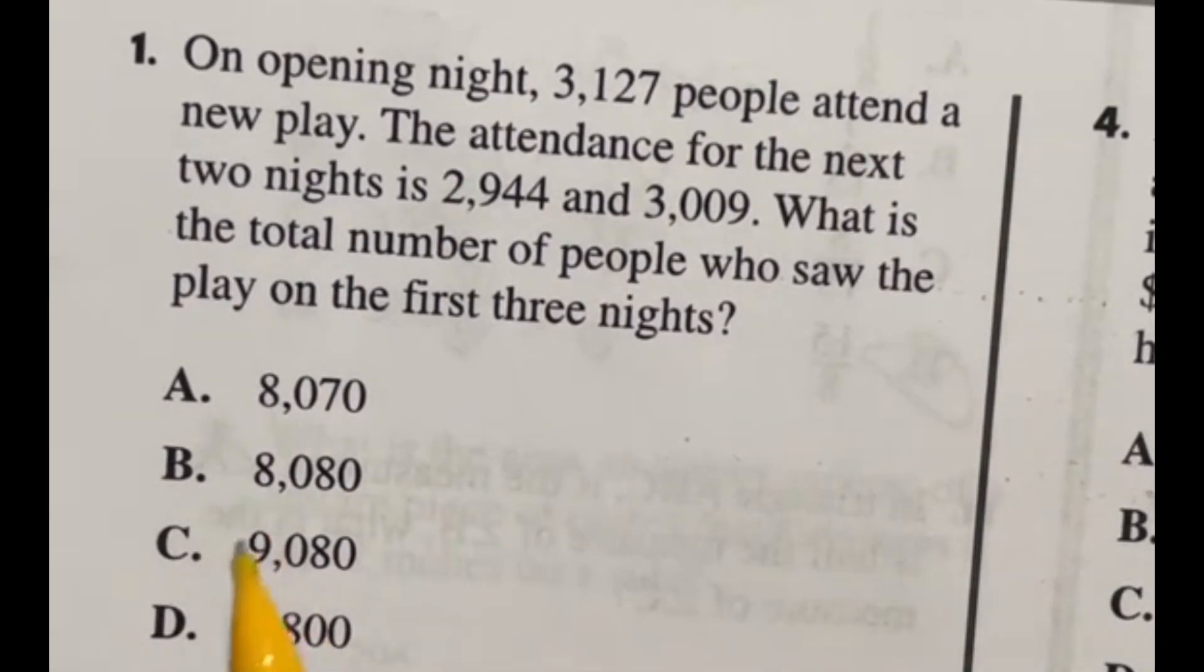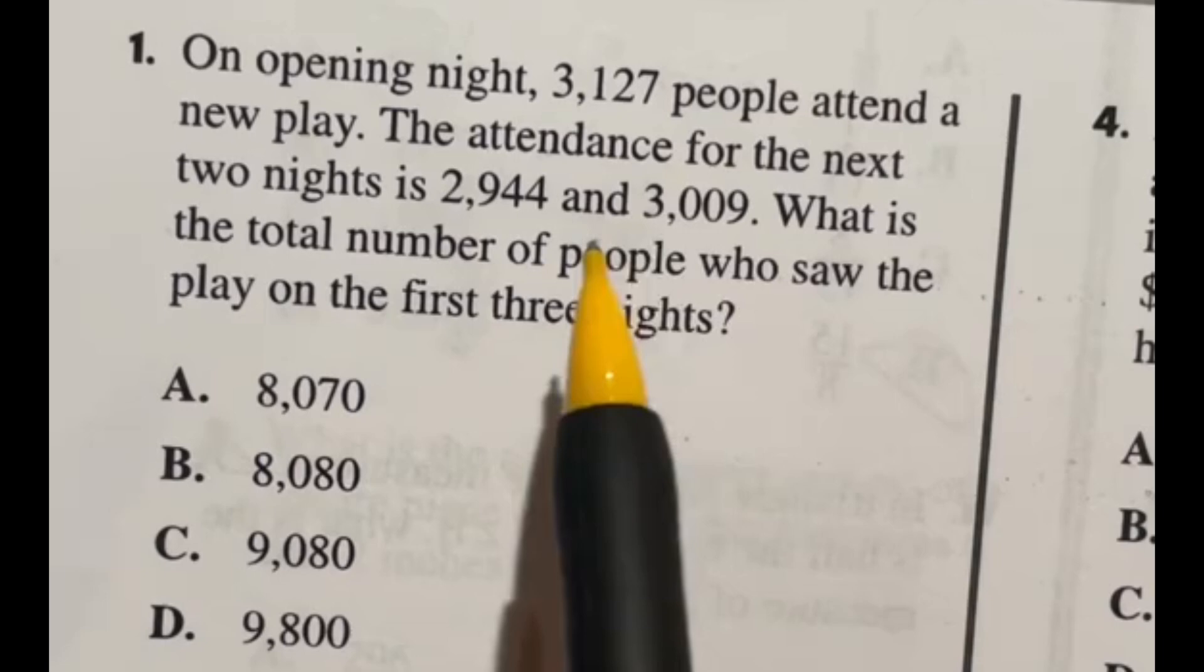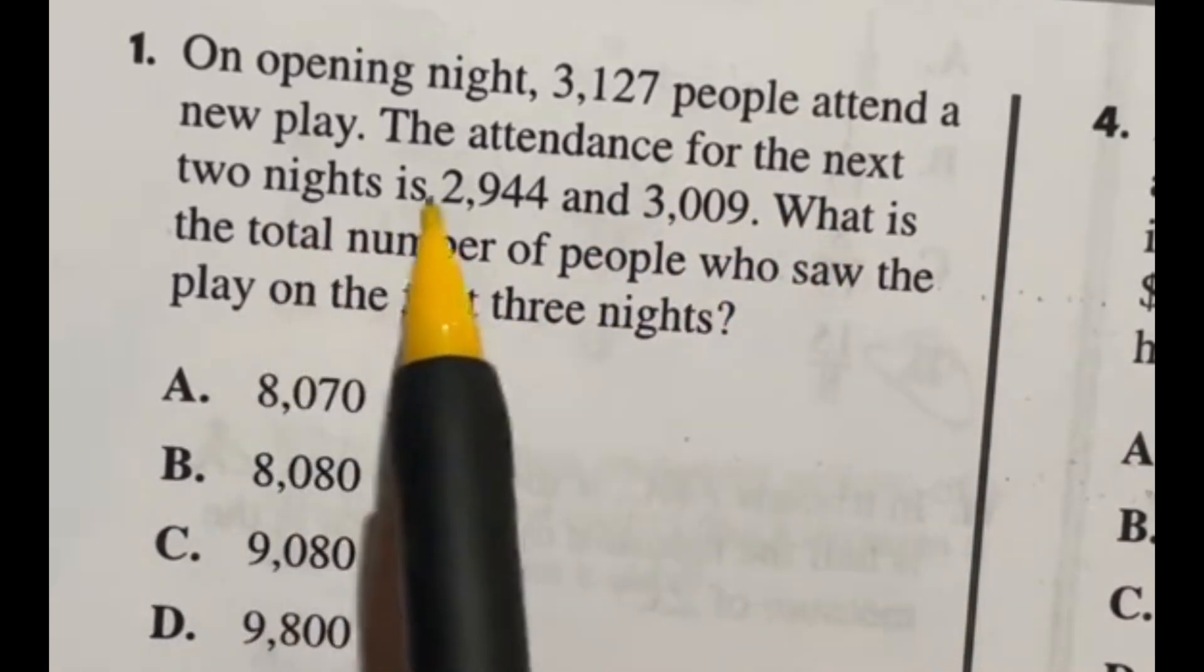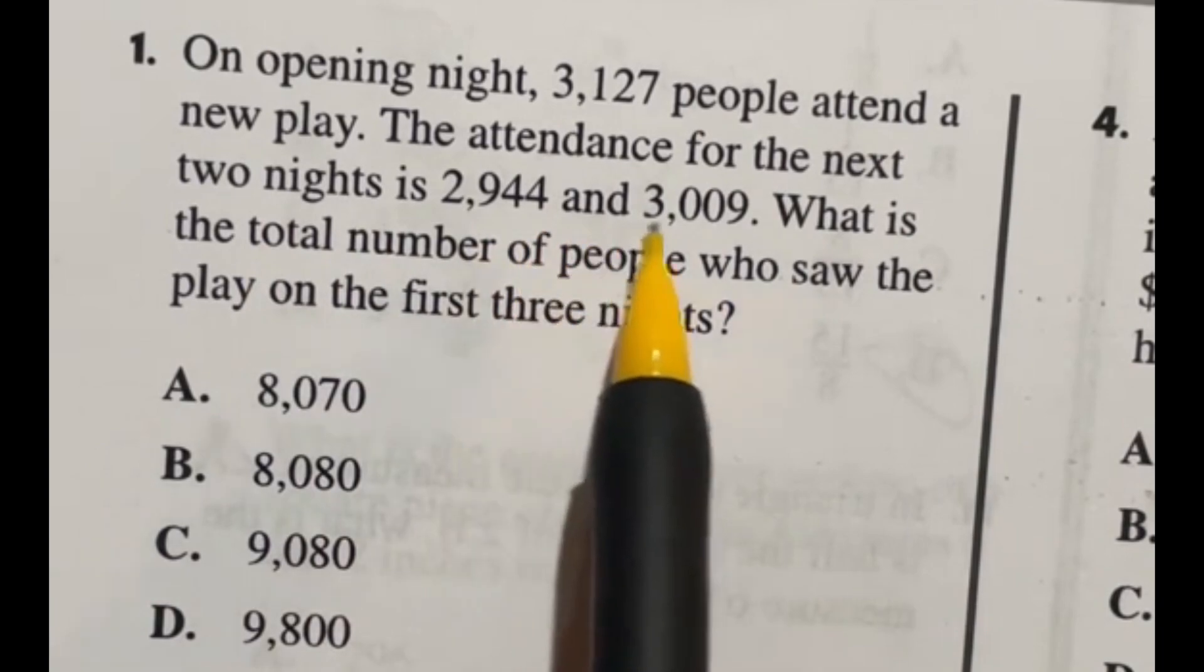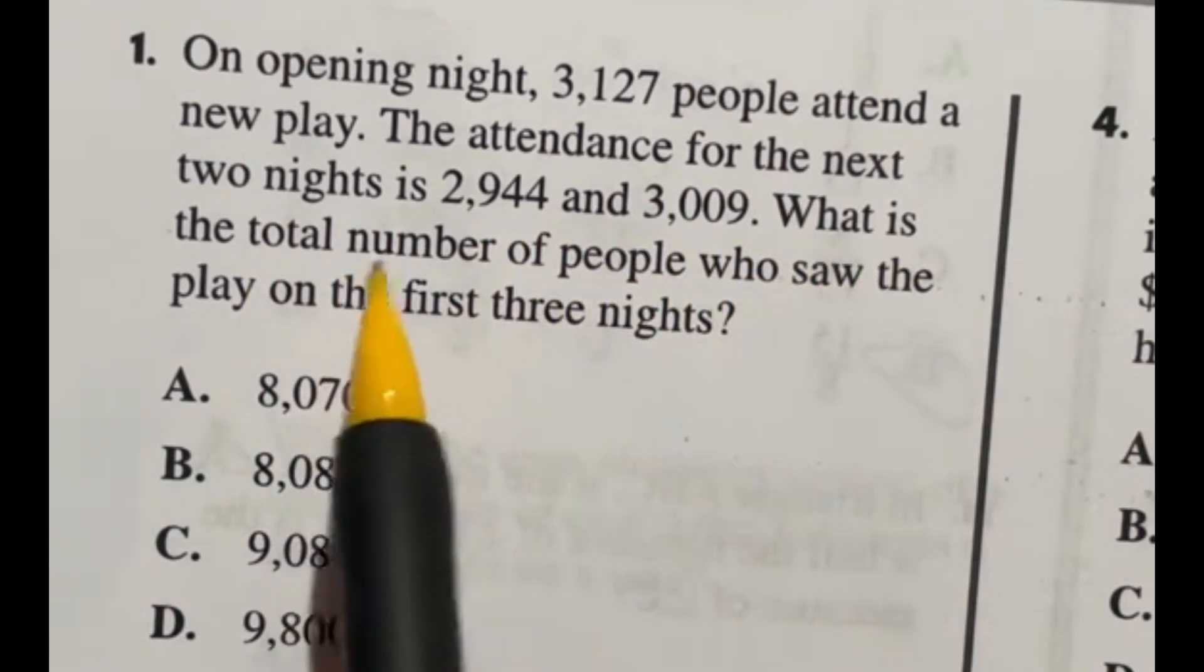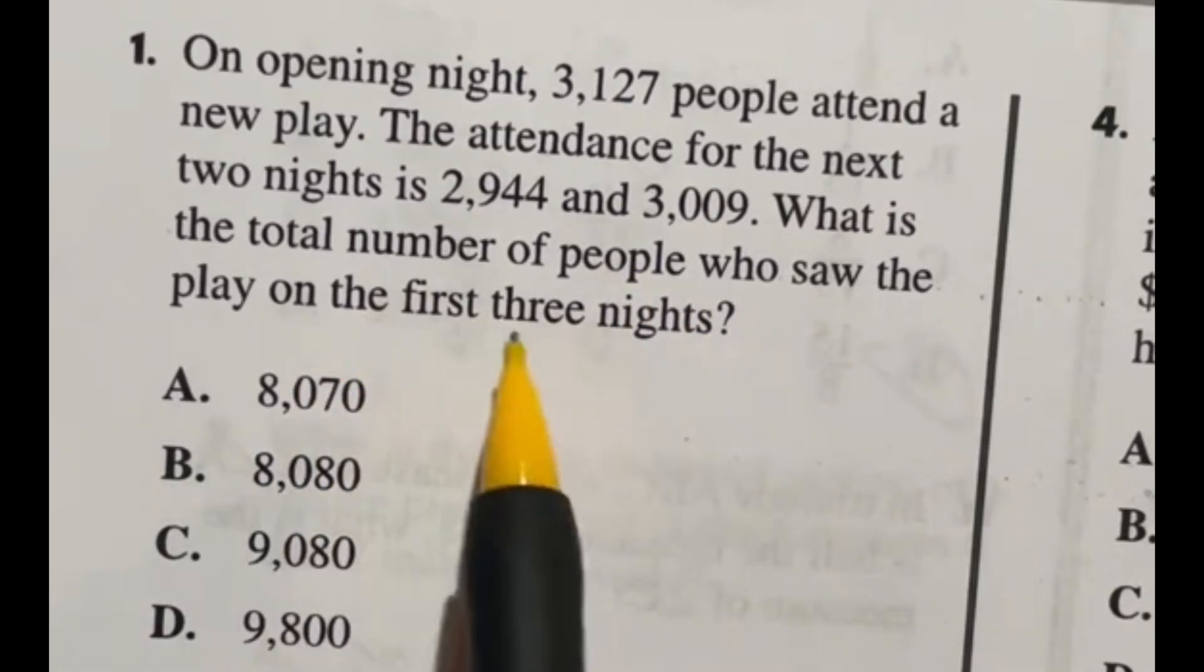And it says here that on opening night, 3,127 people attended a new play. The attendance for the next two nights is 2,944 and 3,009. What is the total number of people who saw the play on the first three nights?